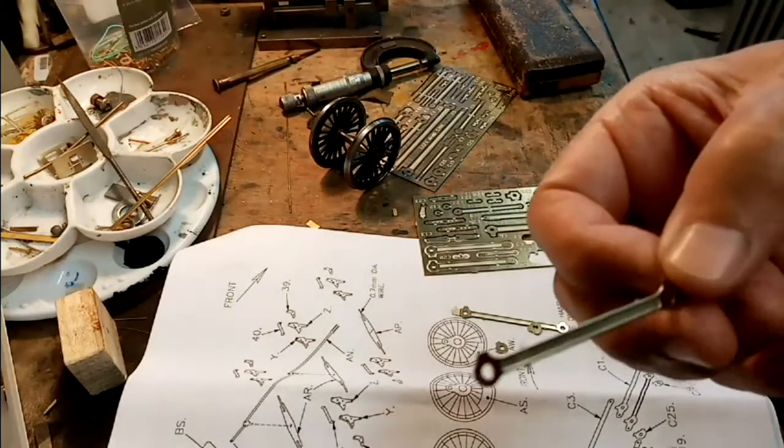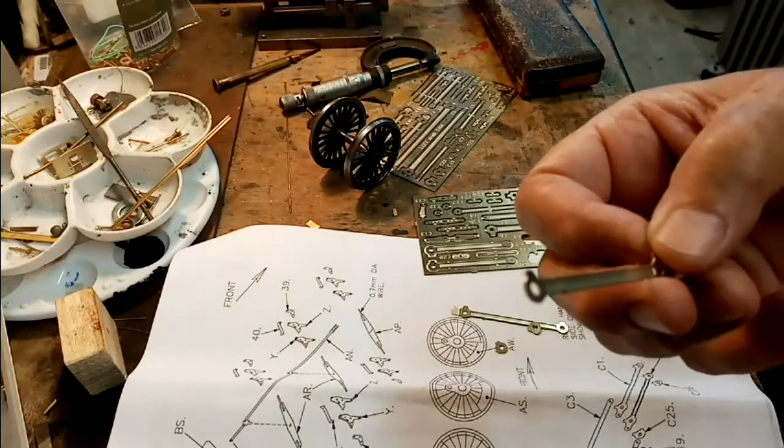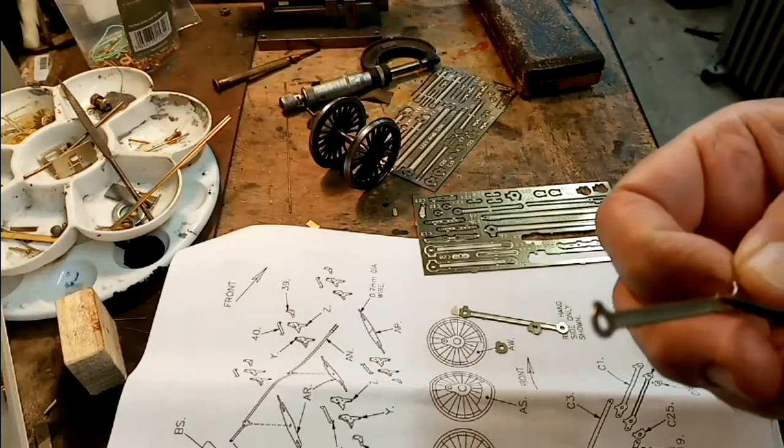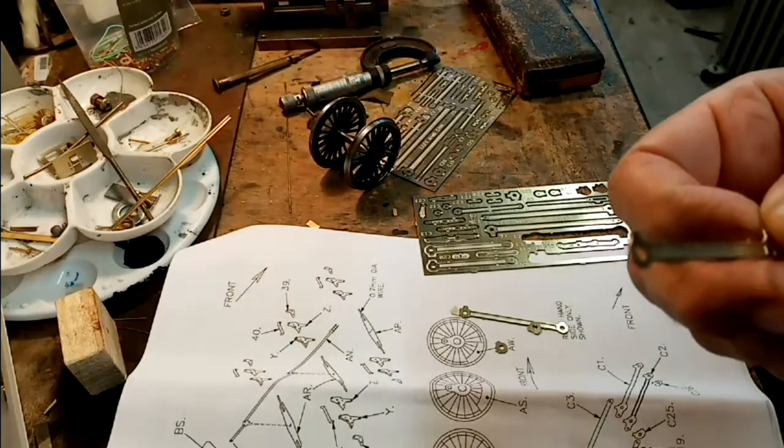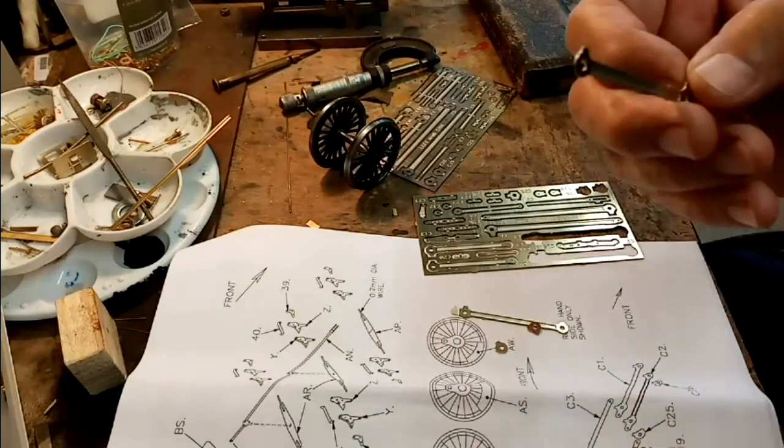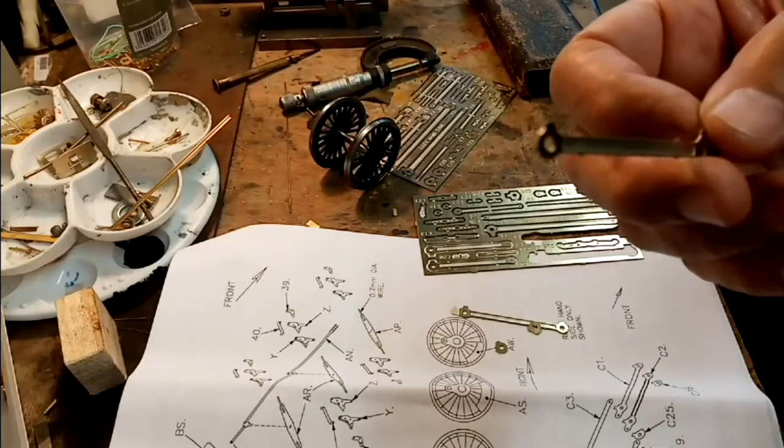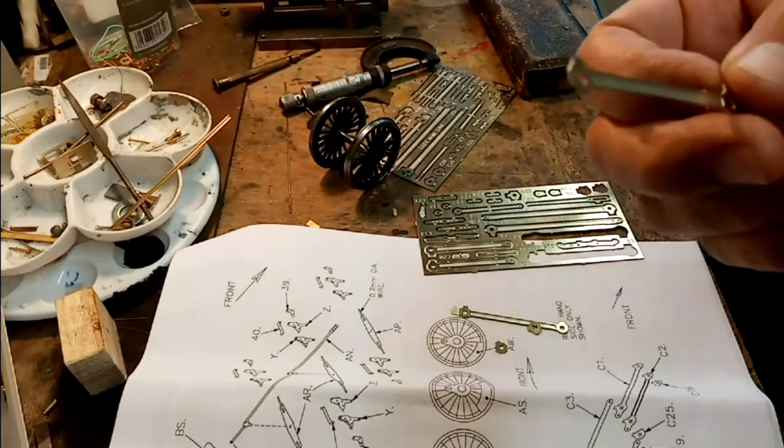At this stage I need to just cut out, just file it to get the tabs cut off. That's as much as I'm going to do at this stage to get them all to this stage, all of this particular rod to that stage, and then do the next one.